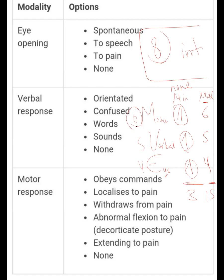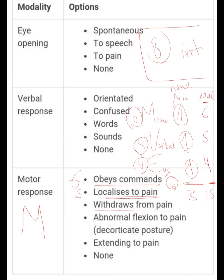For the motor score, we start with obeying commands. When you order the patient to raise their eyes or protrude their tongue and they do it, they take a motor score of six. When they do not respond but localize to a painful stimulus, they take five. When they withdraw from pain without localizing, they take four.